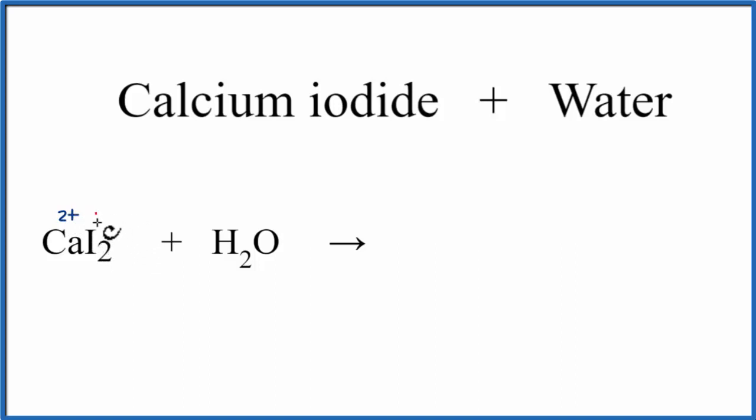Since we have two iodines, that gives us a negative 2 that cancels out the positive 2 here. So it's a neutral compound.